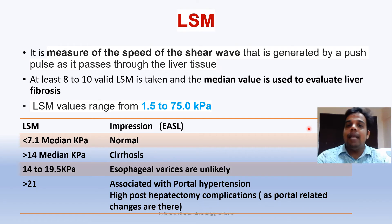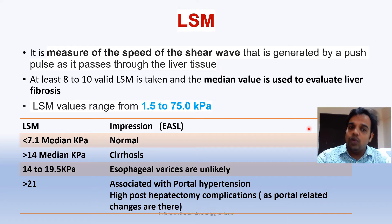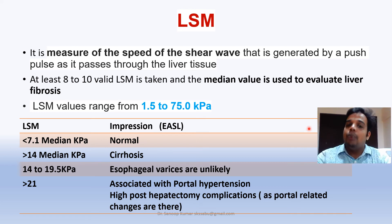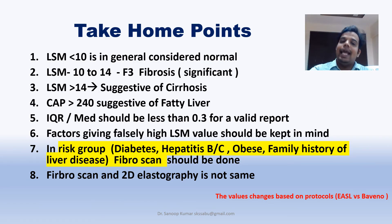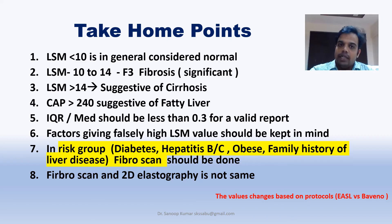This can help you predict portal hypertension in your clinic. Any patient with an LSM value more than 10 KPA should be properly evaluated by a gastroenterologist to determine if they have complications of cirrhosis, portal hypertension, or etiological issues. Between 10 to 14 indicates F3 fibrosis — significant, should be referred to a gastroenterologist. LSM more than 14 is suggestive of cirrhosis and should be properly graded, evaluated, and worked up for etiology and complications.